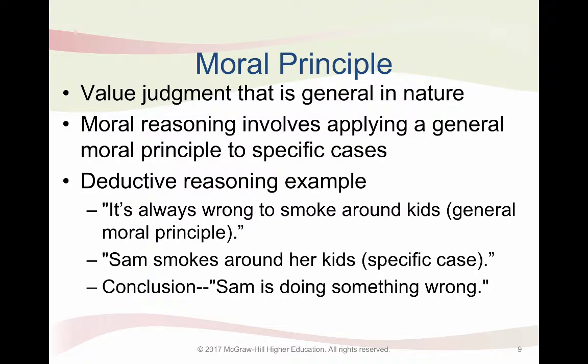A moral principle is a moral value judgment that's general in nature — we believe such principles apply to a society at large. When we reason morally, we usually apply a general principle to a specific case. For example: 'It's always wrong to smoke around kids. Sam smokes around her kids, so Sam is doing something wrong.' The first premise is a general moral principle, the second applies it to a specific instance, and the conclusion follows. This is a moral deductive argument.